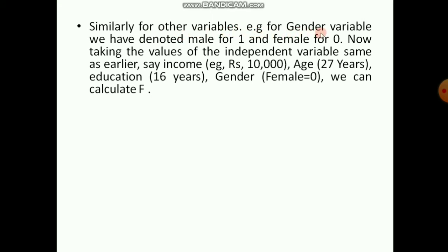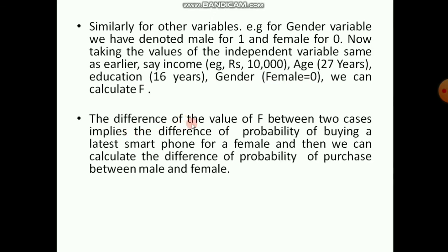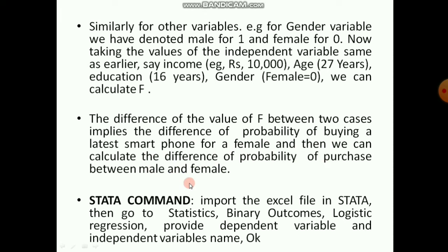Similarly, for a categorical variable like gender — where male is coded as 1 and female as 0 — you keep income at 10,000, age at 27, education at 16 years, but change gender from 1 to 0. The difference in f between the two cases gives the difference in probability of buying a latest smartphone between males and females. In Stata: import the Excel file, go to Statistics > Binary Outcomes > Logistic Regression, provide the dependent and independent variable names, and click OK.